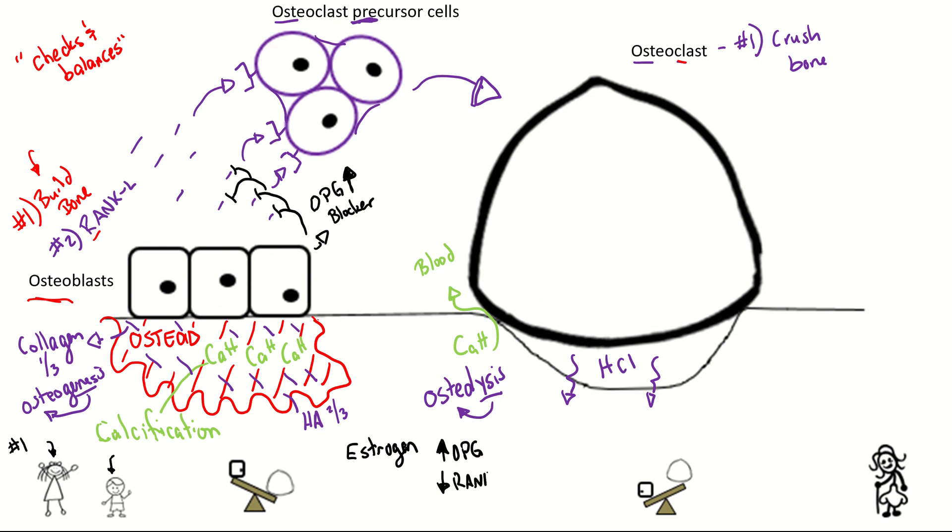So with less RANK-L keys, you change the balance between osteoblasts and osteoclasts and you decrease osteoclast formation, which means osteoblasts are going to win and you're going to build bone more.